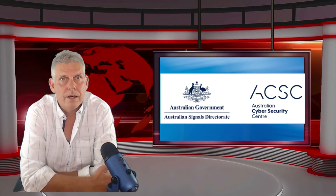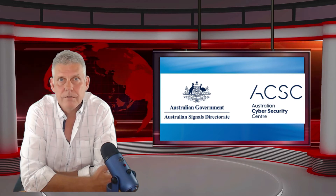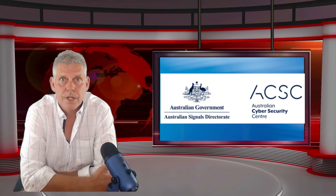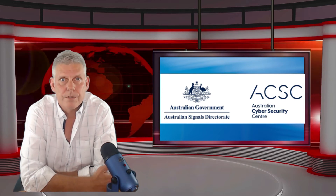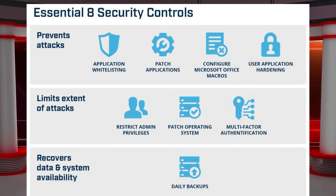They've put together eight mitigation strategies collectively known as the Essential Eight to protect organisations against known cyber threats. The Essential Eight consists of eight separate strategies to prevent attacks, limit the extent of an attack, and recover data or applications in the event of an attack.